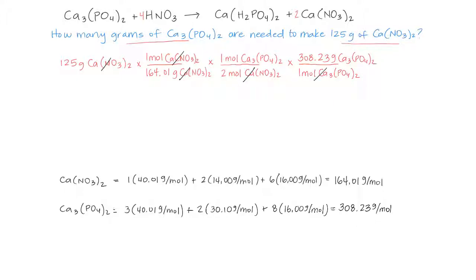Our moles cancel and we're left with grams of calcium phosphate, which is what the problem is asking us for. So we need 117 grams of calcium phosphate to produce 125 grams of calcium nitrate.